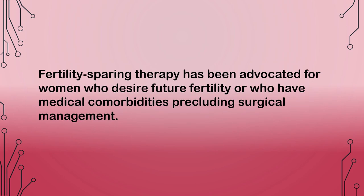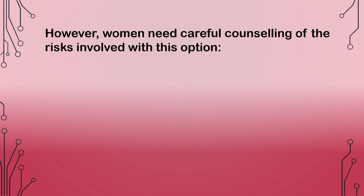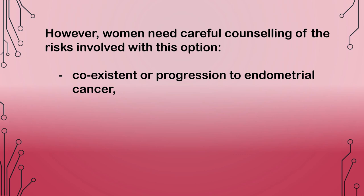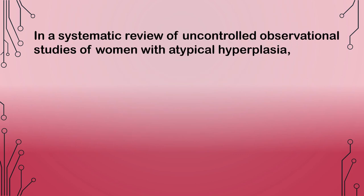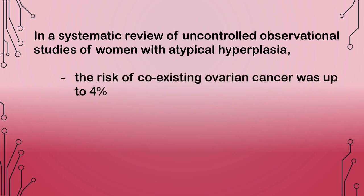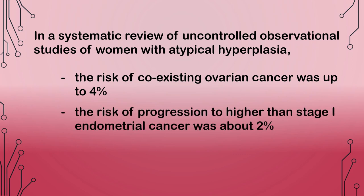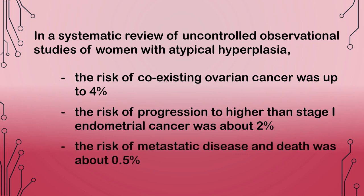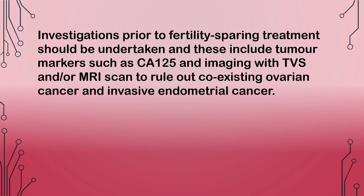Fertility-sparing therapy has been advocated for women who desire future fertility or who have medical comorbidities precluding surgical management. However, women need careful counseling of the risks involved, including: coexistent or progression to endometrial cancer, coexistent ovarian cancer, metastatic disease, and death. In a systematic review of uncontrolled observational studies of women with atypical hyperplasia, the risk of coexisting ovarian cancer was up to 4%, the risk of progression to higher than stage 1 endometrial cancer was about 2%, and the risk of metastatic disease and death was about 0.5%.